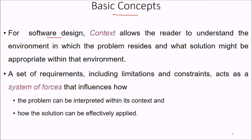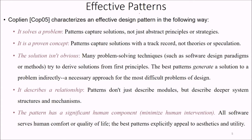There are certain basic concepts for software design. Context allows the reader to understand the environment in which the problem resides and what solution might be appropriate within that environment. A set of requirements, including limitations and constraints, acts as a system of forces that influence how the problem can be interpreted within its context and how the solution can be effectively applied. Coplian characterizes an effective design pattern as one that solves the problem, is a proven concept, has a non-obvious solution, describes relationships, and has a significant human component — it minimizes human intervention but still retains some human component.